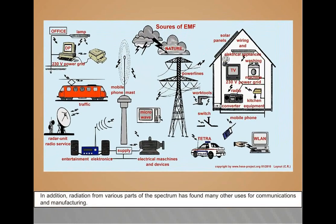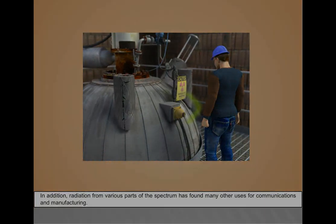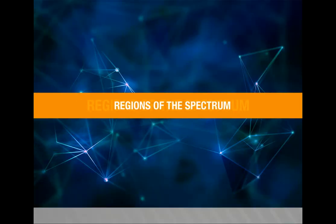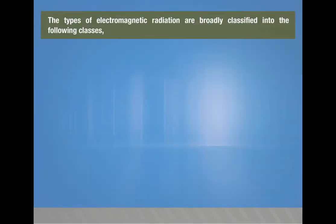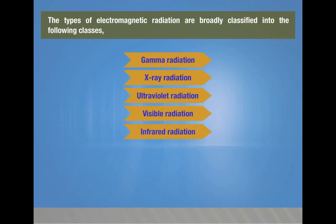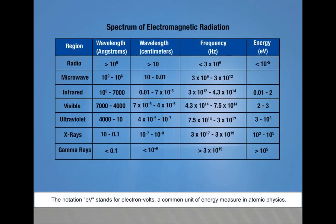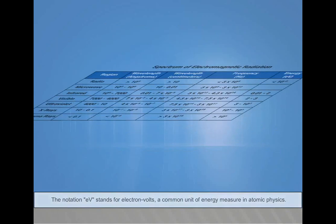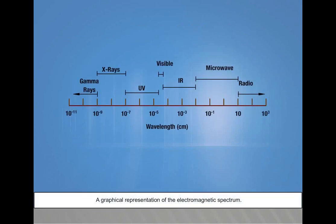In addition, radiation from various parts of the spectrum has found many other uses for communications and manufacturing. The types of electromagnetic radiation are broadly classified into the following classes: gamma radiation, X-ray radiation, ultraviolet radiation, visible radiation, infrared radiation, microwave radiation, and radio waves. The notation EV stands for electron volts, a common unit of energy measured in atomic physics. A graphical representation of the electromagnetic spectrum.